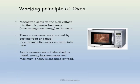Now we come to the working principle of the oven. The magnetron converts high voltage electricity into microwave energy. These microwaves are absorbed by the cooking food, and thus electromagnetic energy is converted into heat. Since microwaves are not absorbed by metal, energy loss is minimized and maximum energy is absorbed by the food.